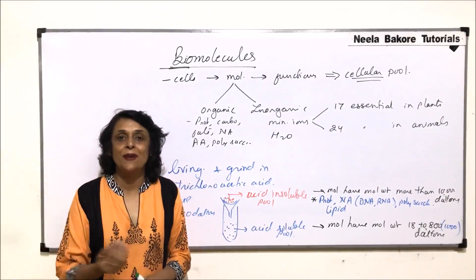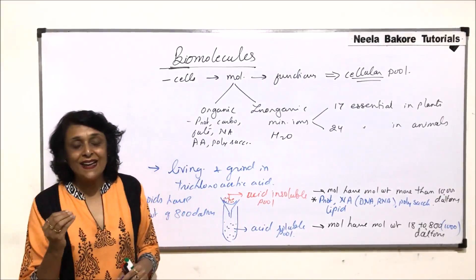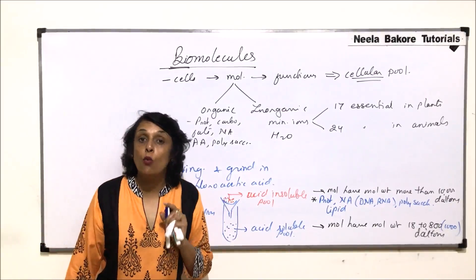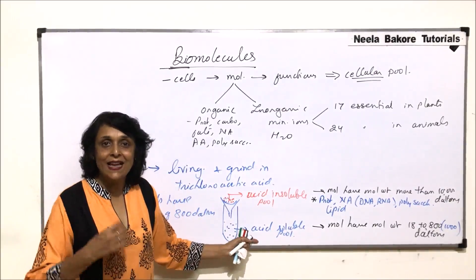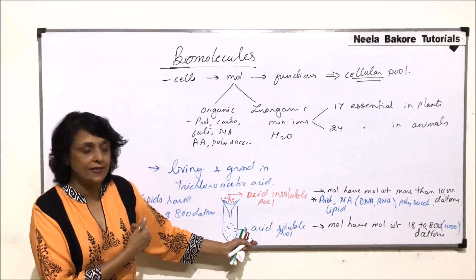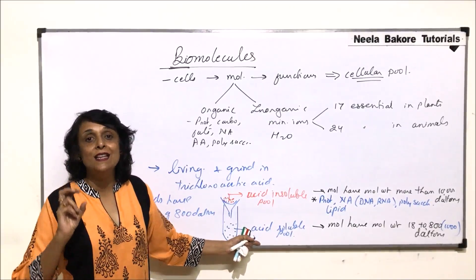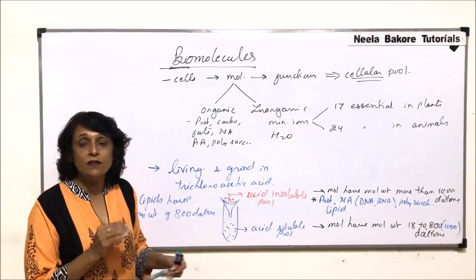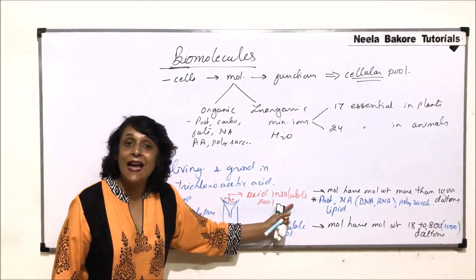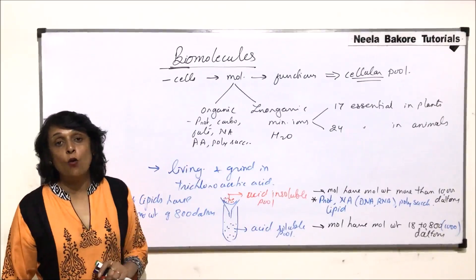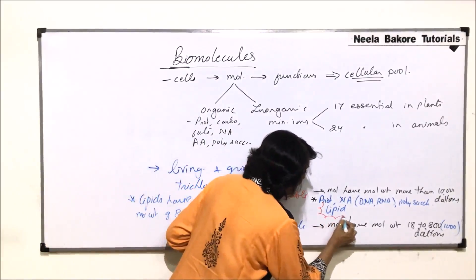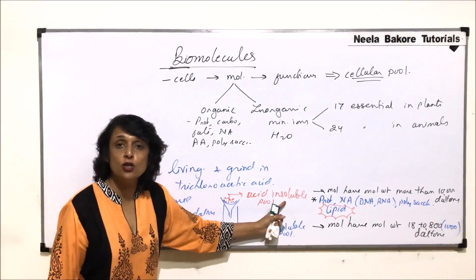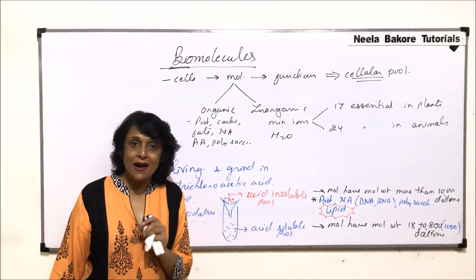These vesicles are insoluble in water. Since the acid contains water, the vesicles — which are predominantly the lipid component — do not dissolve in the acid. So they remain in the acid-insoluble pool. However, according to their molecular weight, lipids are classified as micromolecules, even though they are found in the acid-insoluble pool which predominantly contains macromolecules.